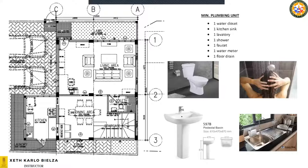That is the basic plumbing unit, because the house requires these fixtures for the user or the owner. Other provisions to become a minimum plumbing unit: you need a water meter, a floor drain or shower drain, and a faucet — either for watering the plants or for laundry, for washing clothes.